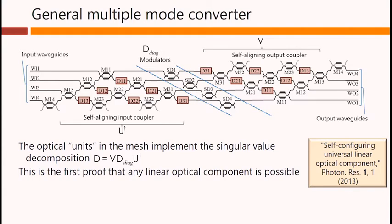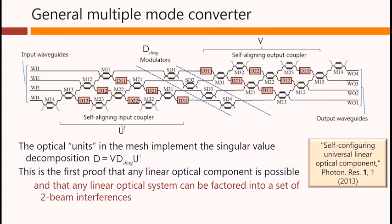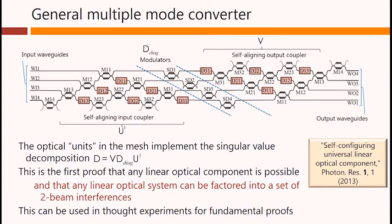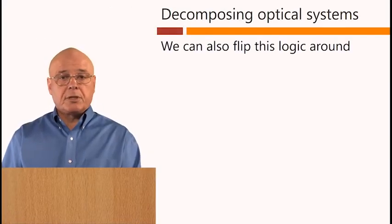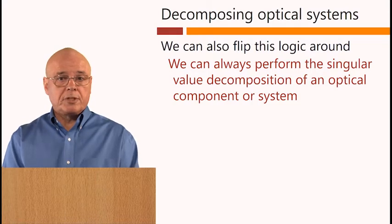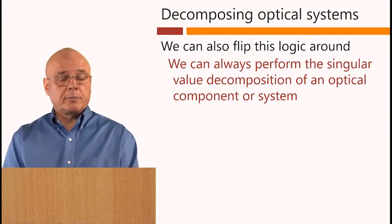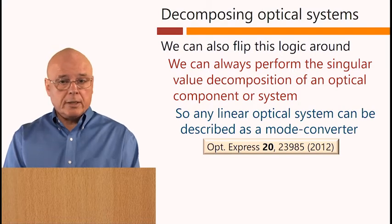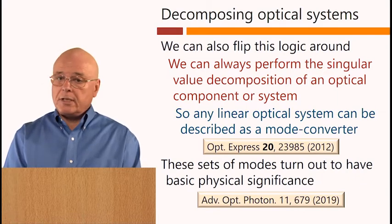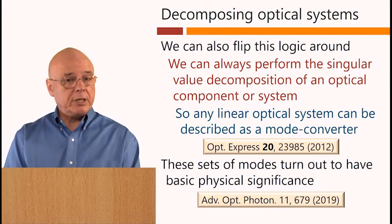This, incidentally, is the first proof that any linear optical component is possible. And, incidentally also, that any linear optical system can be factored into a set of two-beam interferences, which is something that may not have been obvious to you. This can be used in thought experiments for fundamental proofs as well. We can also flip this logic around. We can always perform the singular value decomposition of any linear optical component or system. So, any linear optical system can be described as a mode converter. And these sets of modes that we come up with turn out to have basic physical significance.